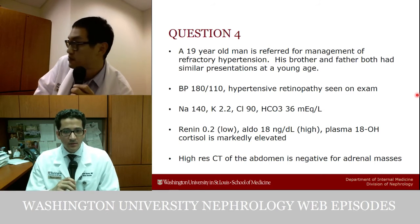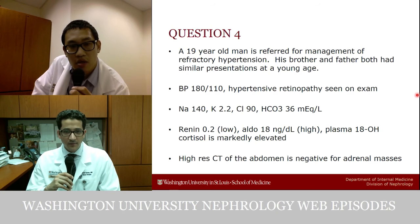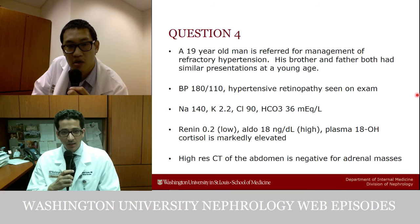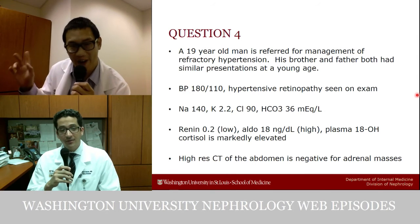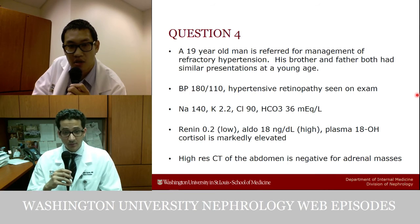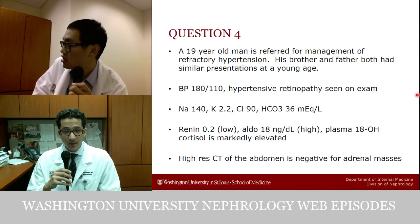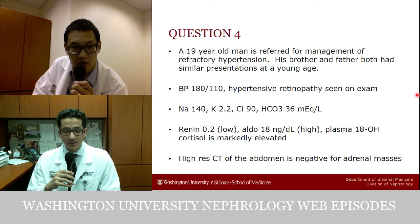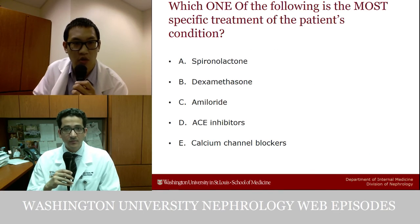This is a young man with a positive family history, hypertension, hypokalemic alkalosis, suppressed renin, elevated aldosterone, and markedly elevated 18-hydroxycortisol with no adrenal masses on CT. This looks like familial hyperaldosteronism — with the elevated 18-hydroxycortisol and no adrenal mass, it's most likely type 1, also known as glucocorticoid remediable aldosteronism.